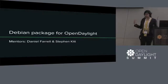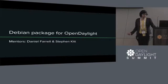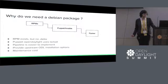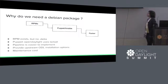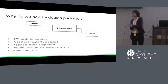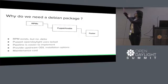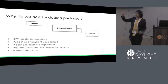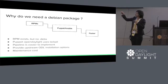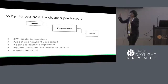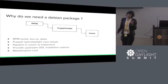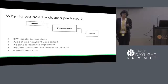I'll move on to how I worked on what I did in this project. So why do we need Debian packages? For OpenDaylight, RPMs already exist. This is the pipeline that an RPM follows — RPMs are consumed by Puppet and Ansible, which is then consumed by Packer like Vagrant Baseboxes and Docker containers.